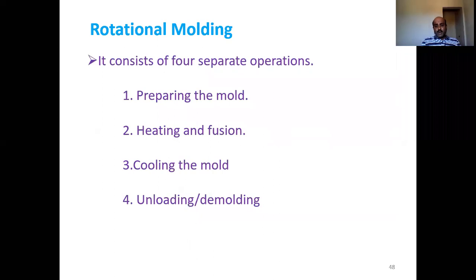Rotational molding consists of four separate operations: first, preparing the mold; second, heating and fusion; third, cooling; and fourth, unloading and demolding. The steps are similar across most plastic molding techniques, each having its own advantages.